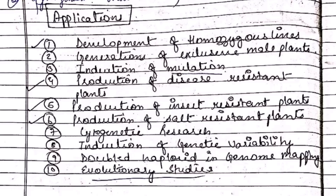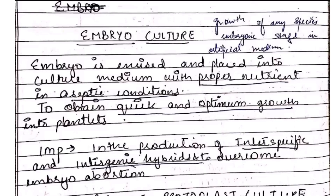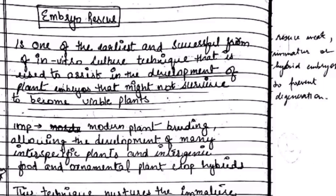The next topic is embryo culture and embryo rescue. An embryo is a part of the seed that consists of tissues for the leaf, stem, and root, as well as one or more cotyledons. Embryo culture means the growth of any species during its embryonic stage on an artificial medium, which helps to obtain quick and optimum growth of plants. Embryo rescue refers to the development of plant embryos that might not survive to become viable plants.